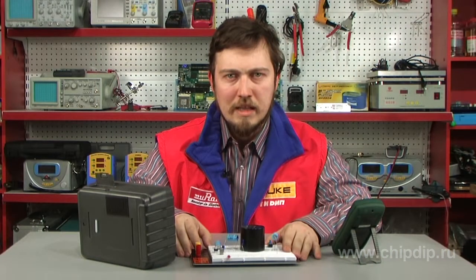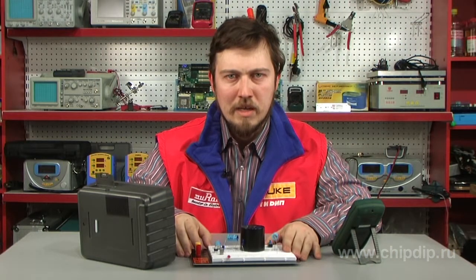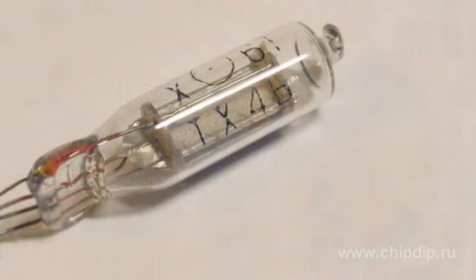For example, in a number of TV sets produced in our country, the glow-discharge thyratron TH4B is used as a vertical scanning master oscillator.